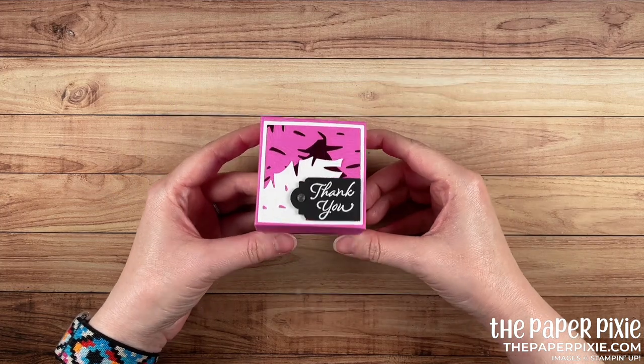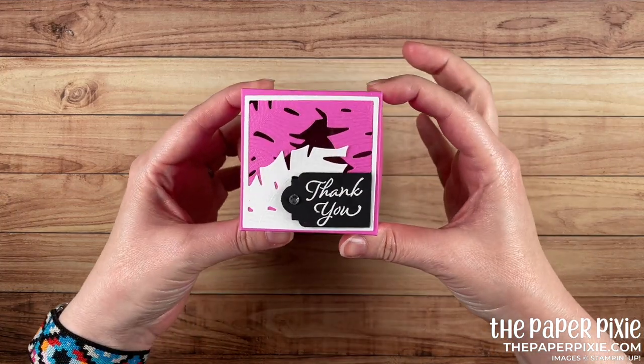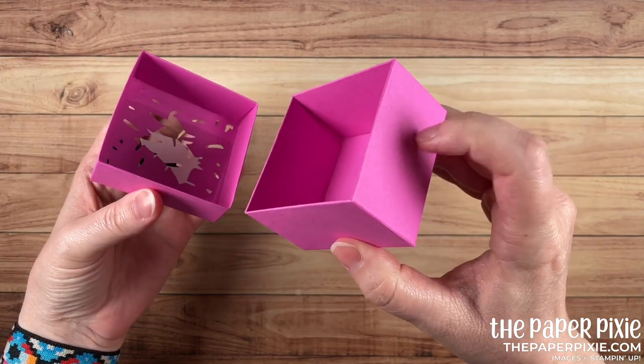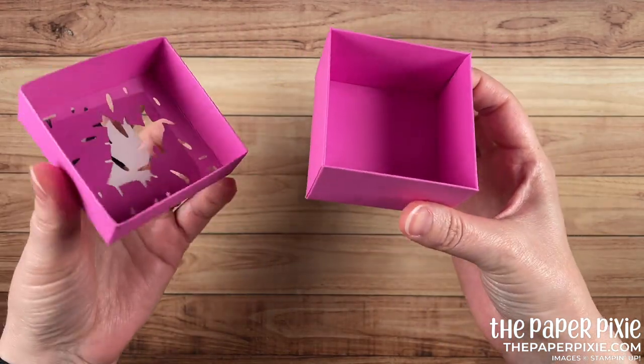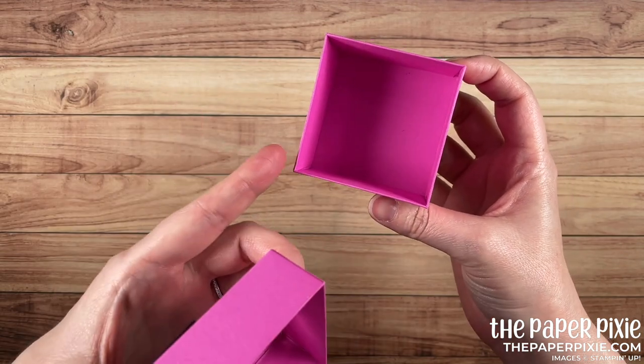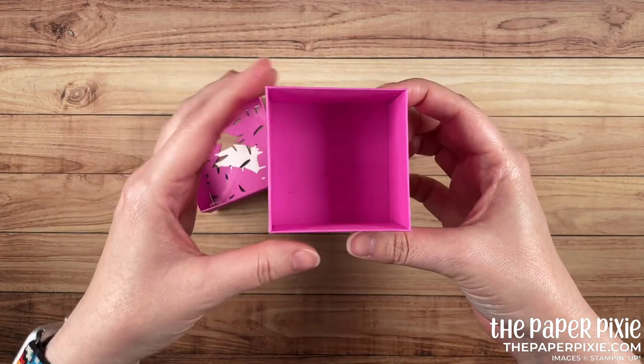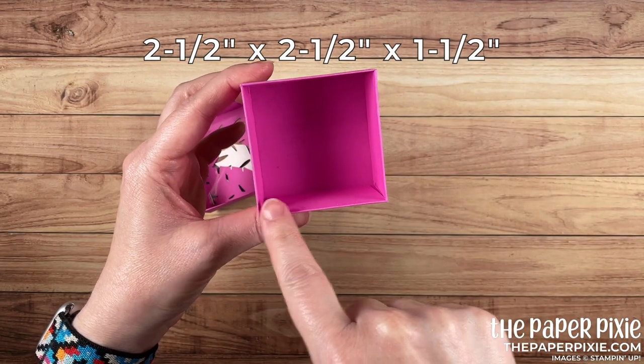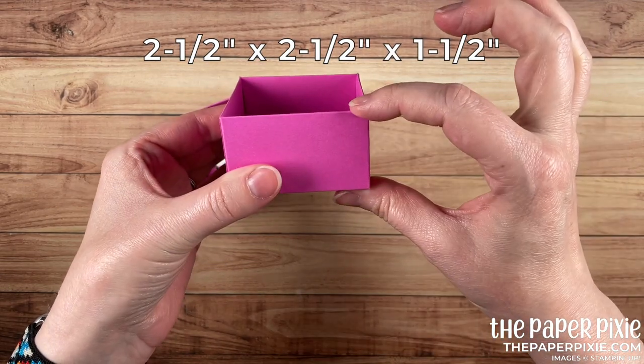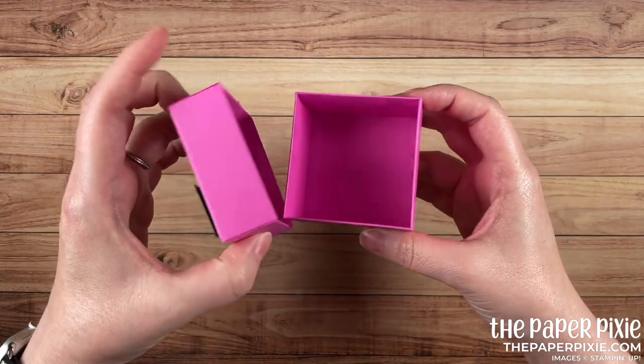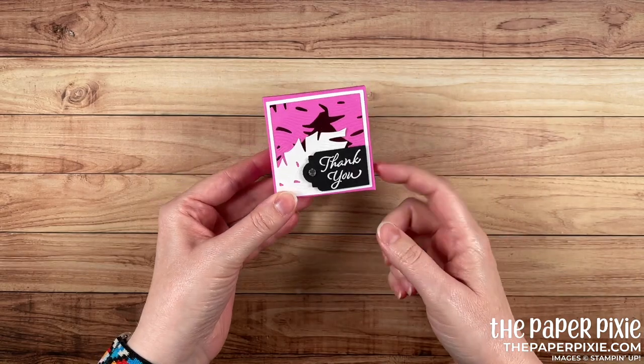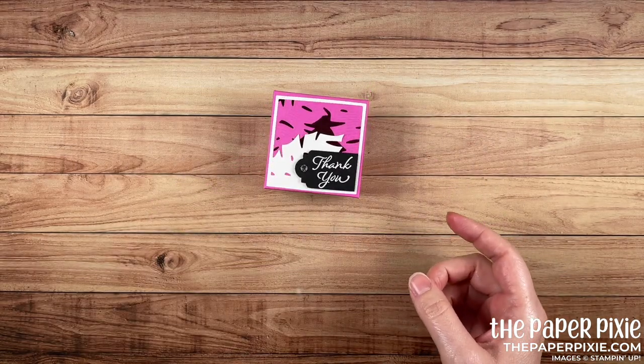In this video tutorial I'm going to show you how to make this Tranquil Thoughts gift box. Both the lid and the base have reinforced sides and it's a really good sized box for different types of treats or gifts. The interior dimensions measure two and a half inches by two and a half inches by one and a half inches deep. The lid is just slightly larger so it fits over the base nicely and we're using that beautiful Tranquil Thoughts bundle.